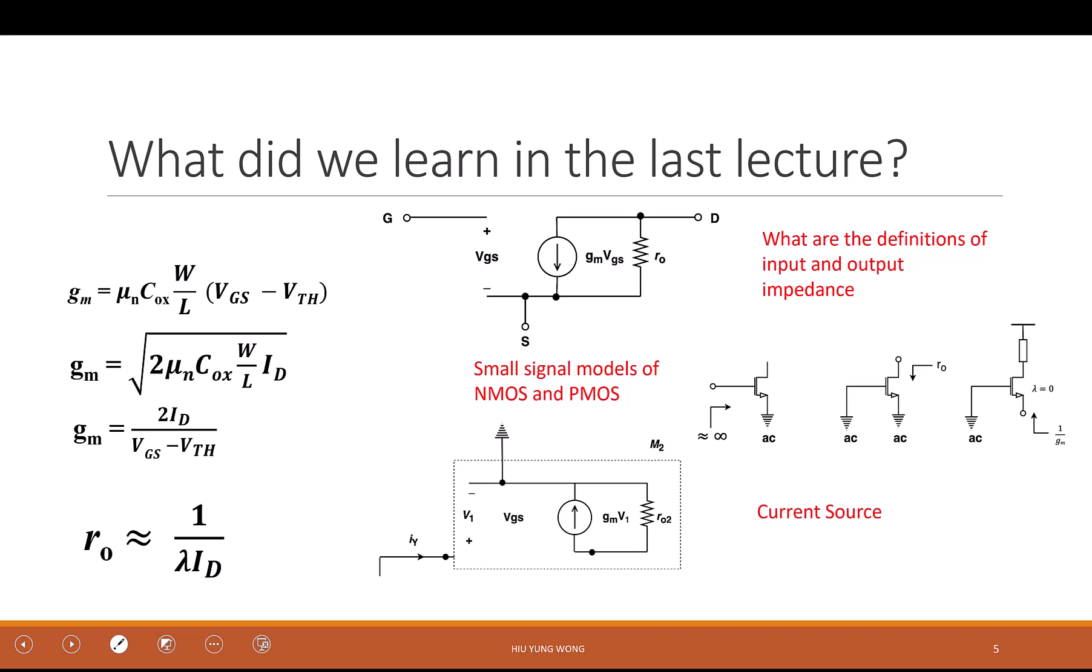And then on top of the DC, we apply some small signal model. Because of that, we can simplify our transistor from the nonlinear equation to a linear system. From there, we extract two very important parameters.